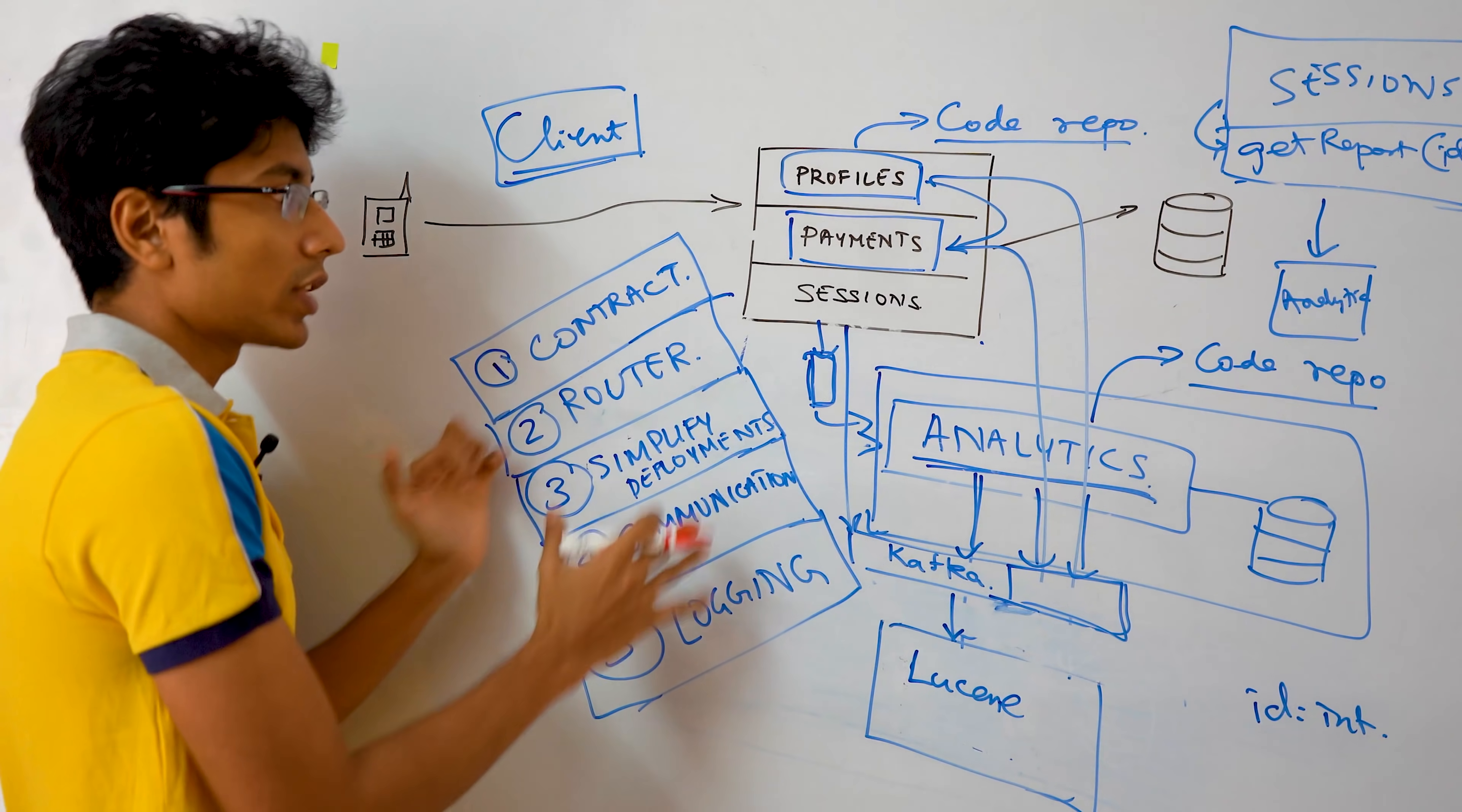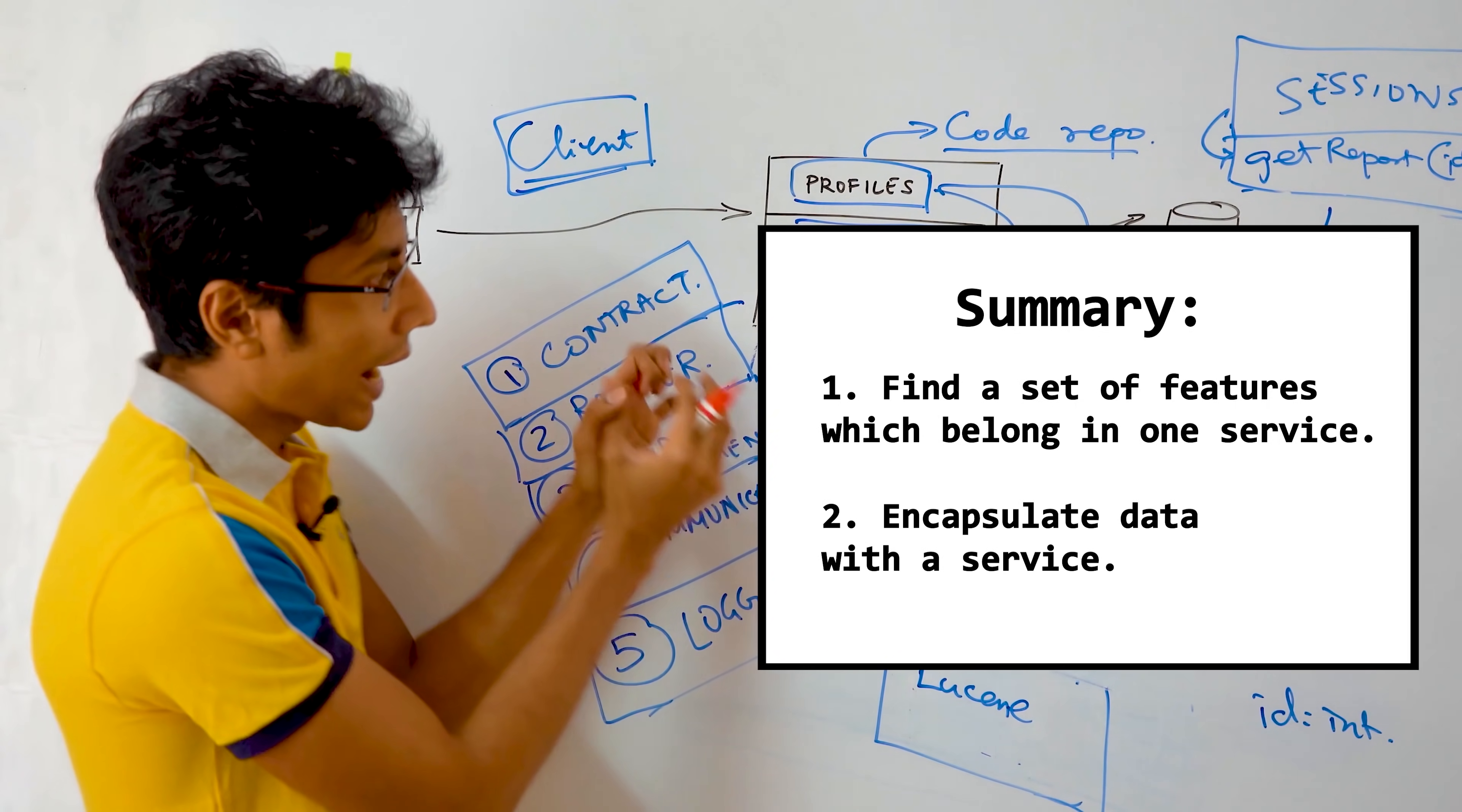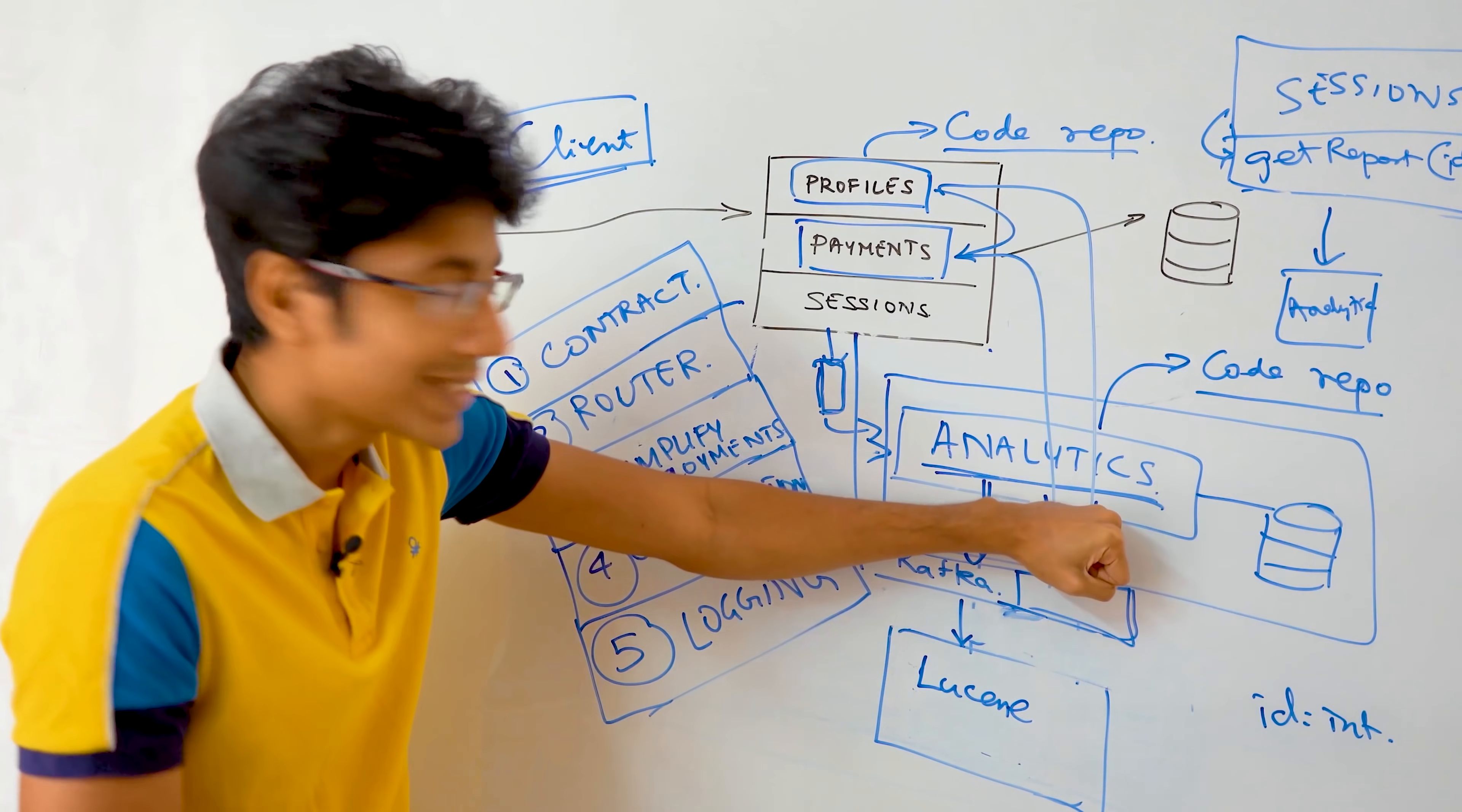To summarize, moving from monoliths to microservices require us to look out for new features which are being added to our existing application. We need to then think about how we can take those new set of features and condense them into a single service, which instead of being added as a module to the monolith will be made a separate microservice. Once this is done, you can start focusing on these five parameters.